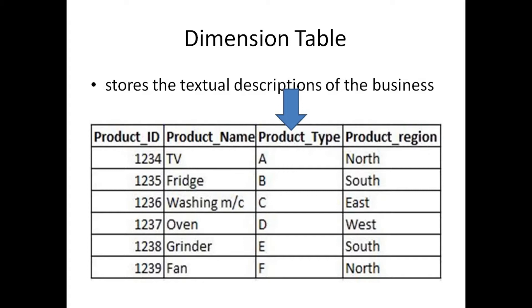We will assign the product type and store those details in the table. The product region is north, south, east, west. This is the product region, and it also needs to be part of the product dimension, with the product ID used for joining to the fact table.